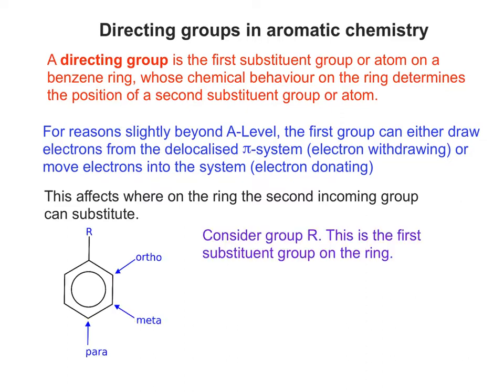Looking at it in general terms, you can see on the benzene ring in the bottom left of the screen there is a group called R - that can be any group at all. There are three positions a second group might sit in: position 2, position 3, or position 4.